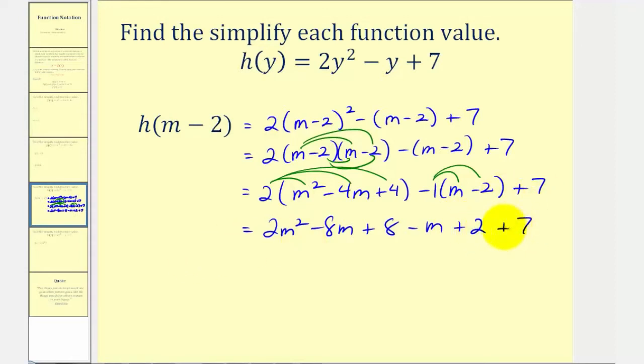The last step, we'll combine like terms. There's only one m squared term. There are two m terms. Negative 8m minus 1m is negative 9m or minus 9m.